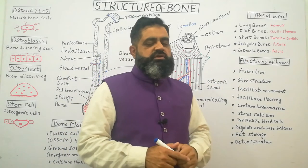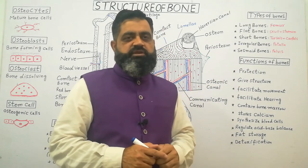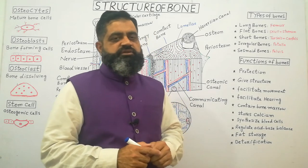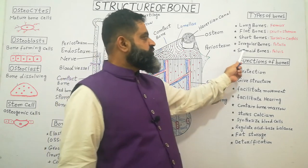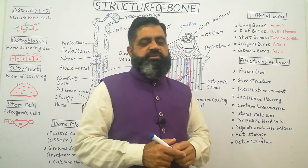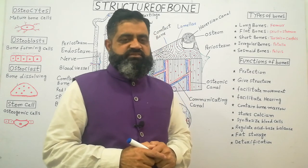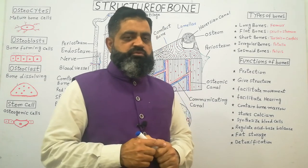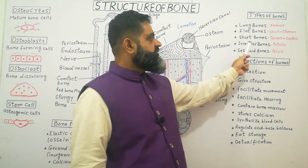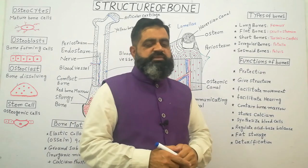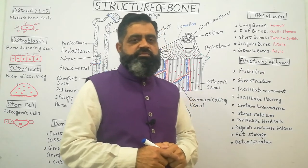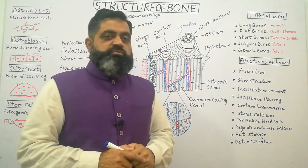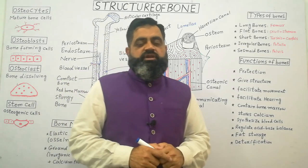The fourth type of bones are irregular bones, such as vertebrae and the pelvic girdle. The fifth type are sesamoid bones; an example of a sesamoid bone is the patella, while examples of irregular bones include the vertebrae.